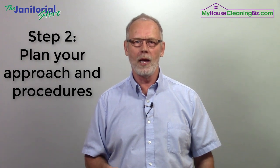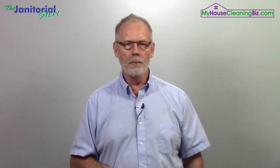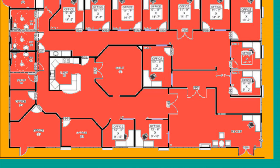Step two: we want to have a plan — we've got to plan our approach and our procedures. Here's a floor plan of a facility with different color-coded areas: a green clear zone, a yellow transition zone, and a red operating zone. It's important to determine where we're going to enter the building or home and where we're going to exit. Having those predetermined points will make our job a lot easier.